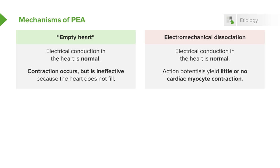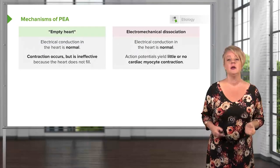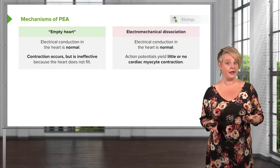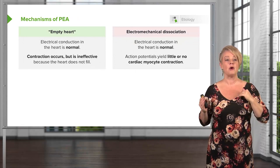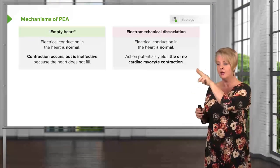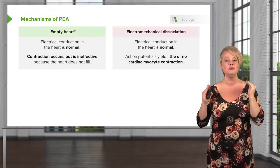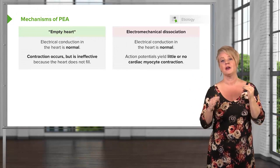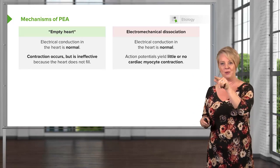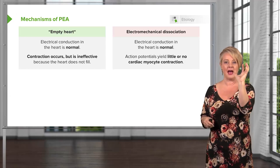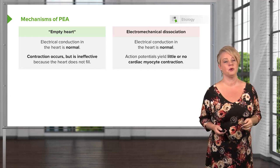However, that contraction is ultimately ineffective because no matter how hard the heart squeezes, if there's nothing inside it — if the blood is on the floor and not inside the heart — it's not going to fill and it's not going to send blood out to the body. By contrast, in electromechanical dissociation, normal cardiac action potentials yield the pretty spikes we see on the monitor, but these action potentials do not yield cardiac contraction. Conduction is normal, but contraction is either absent or so impaired that it doesn't produce a pulse.